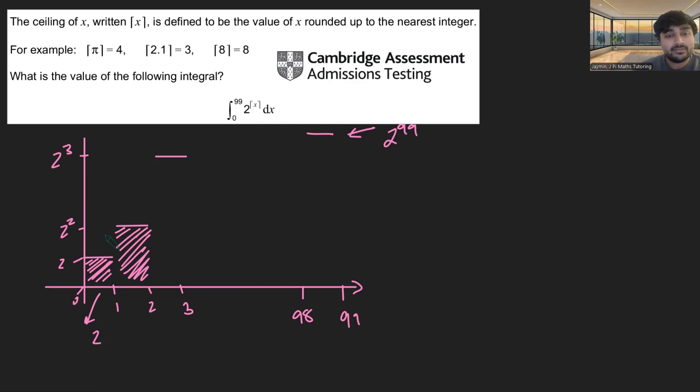What about this second rectangle? Well, base again is 1. Height now is 2 squared, so 2 plus 2 squared. Next one will be 2 cubed, and so on, all the way up to 2 to the 99.